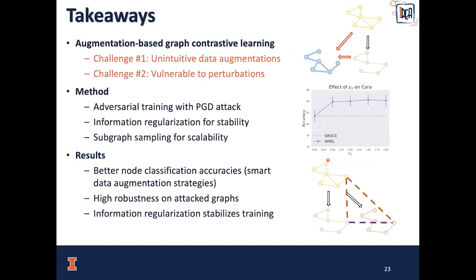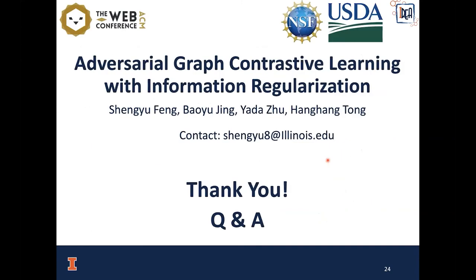Finally, the takeaways. The method we study in this work is augmentation-based graph contrastive learning, and it faces two challenges: unintuitive data augmentations and vulnerability to perturbations. Our solution is to use adversarial training with PGD attack, information regularization for stability, and subgraph sampling for scalability. Our results show that we can achieve better classification accuracy and high robustness on attacked graphs, and information regularization can stabilize the training. That's all for today's talk. Thank you everyone. Please let me know through email if you have any questions about our work or this presentation.